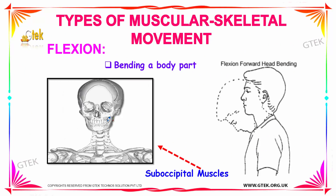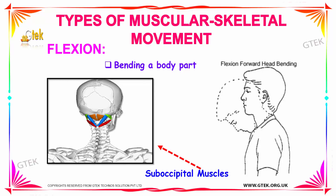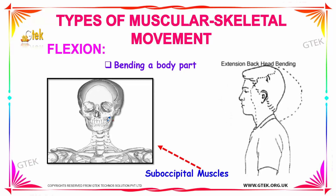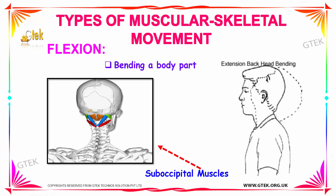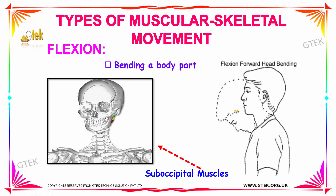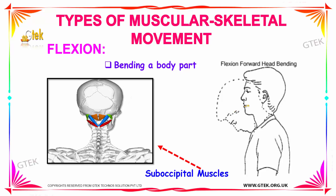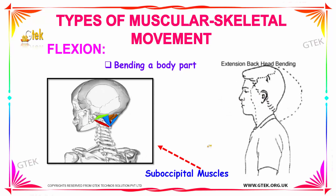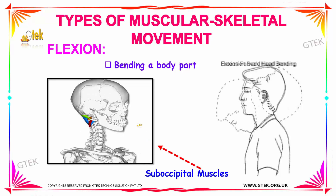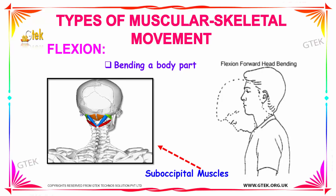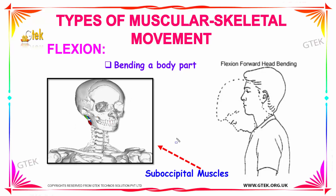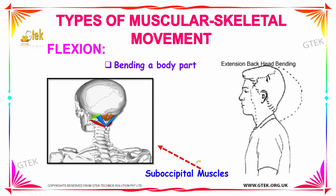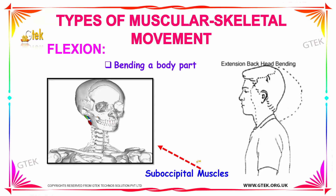The types of muscular and skeletal movement. Our first movement is flexion, which is nothing but bending a body part. Bending of the head is flexion and taking it back is extension. The bending of your head is done by the help of sub-occipital muscles. Using the sub-occipital muscles one can bend the head, and that movement is known as flexion.